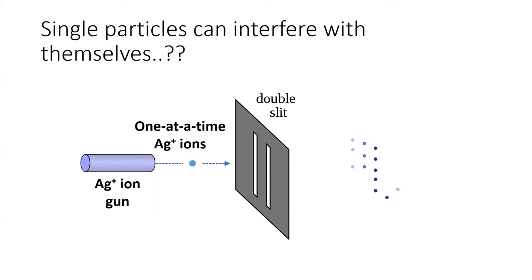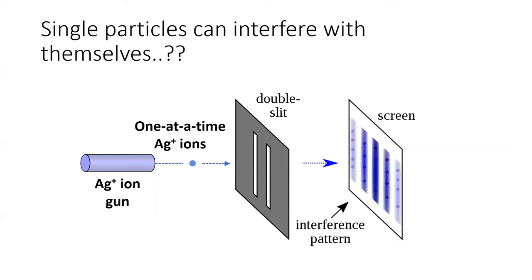Wait a minute. This sure looks a lot like a diffraction pattern. In order for the diffraction pattern to appear, though, the particles from one slit have to be interacting with particles that went through the other slit. And if we only send one silver ion through at a time, how can it be interacting with another silver ion that went through the other slit? What the heck is going on?